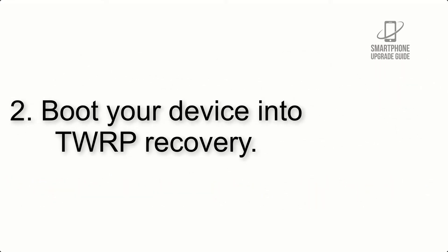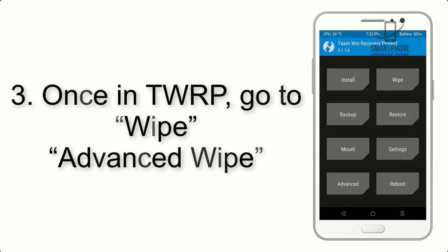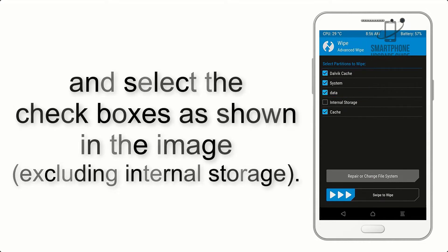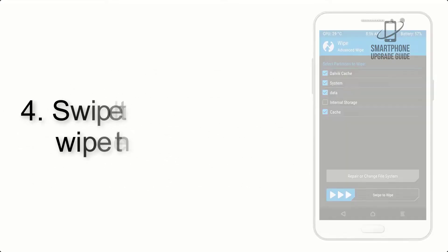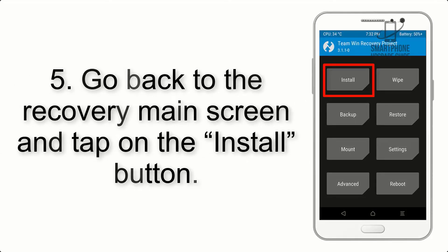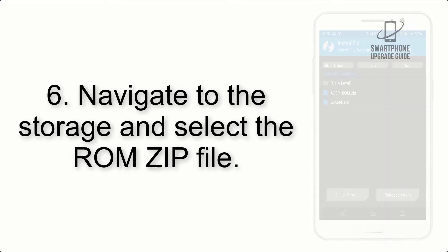Step 2: Boot your device into TWRP recovery. Once in TWRP, click on Wipe, then Advanced Wipe, and select the checkboxes as shown in the image, excluding internal storage. Step 4: Swipe the button to wipe the device. Step 5: Go back to the recovery main screen and tap on the Install button.